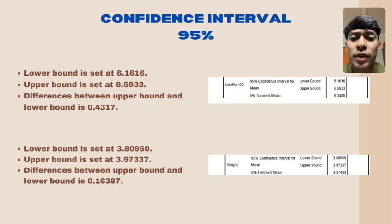Explanation of confidence interval 95%. The descriptive output table shows our 95% confidence interval for the mean confidence in liter per hundred has been calculated. The lower bound is set at 6.1616 and the upper bound is set at 6.5933. The difference between upper bound and lower bound for the 95% confidence interval for the mean confidence in liter per hundred is 0.4317.